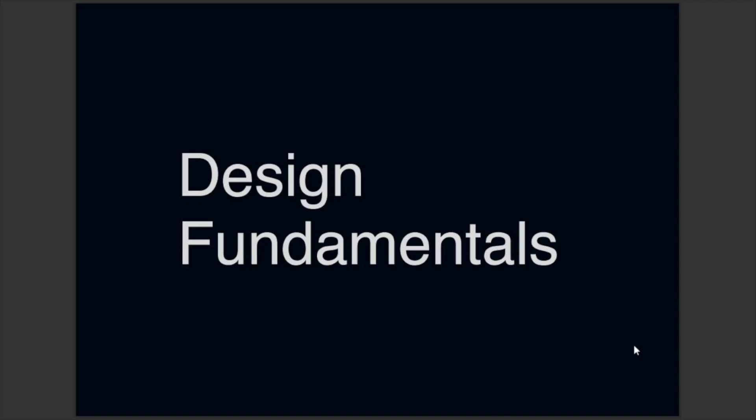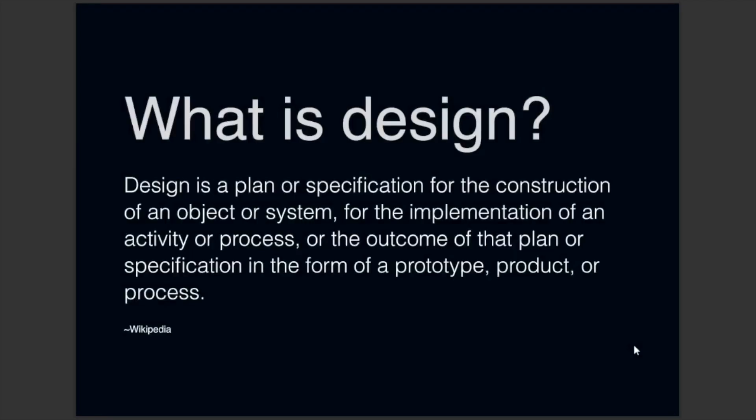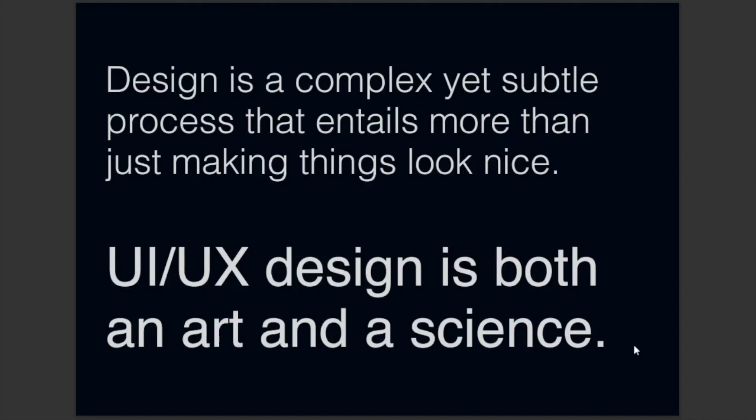Now, what is design? According to Wikipedia, design is a plan or specification for the construction of an object or system, for the implementation of an activity or process, or the outcome of that plan or specification in the form of a prototype, product, or process. It is a complex yet subtle process that entails more than just making things look nice.